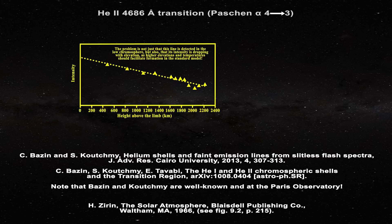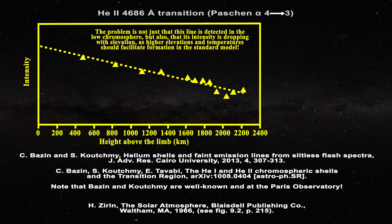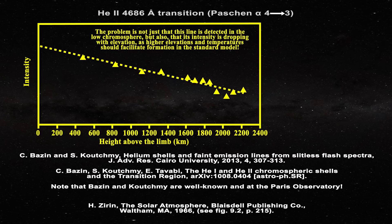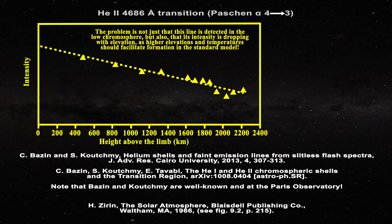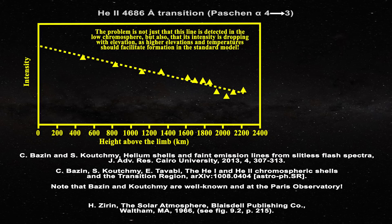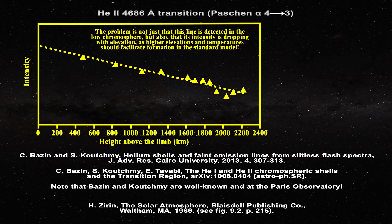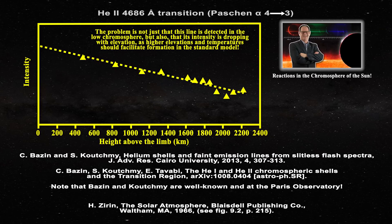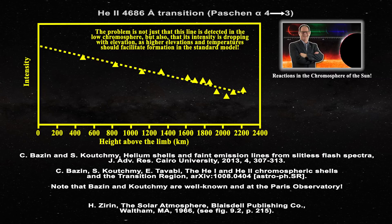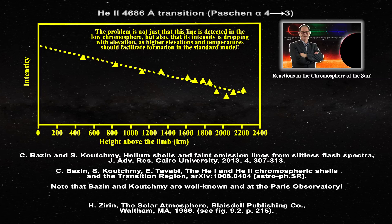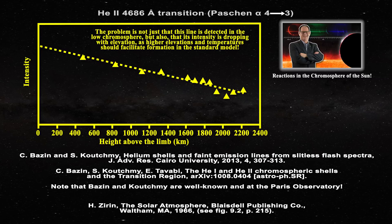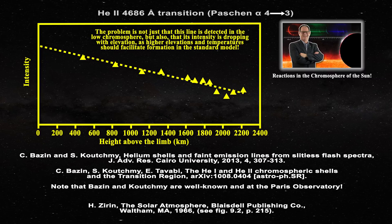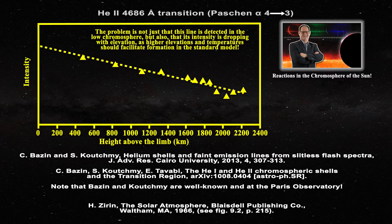If one examines this figure adapted from the Journal of Advanced Research, one can see the source of the problem. The helium-2 line at 4686 angstroms is plotted as a function of height above the solar surface. The line is seen down to a height of only 400 kilometers, which is near the bottom of the solar chromosphere and at an apparent temperature of less than 5000 Kelvin. Given that the temperature of the solar chromosphere is less than 10,000 Kelvin in the standard solar model, then it is impossible to account for the presence of the helium-2 4686 angstrom line in this region of the solar atmosphere.